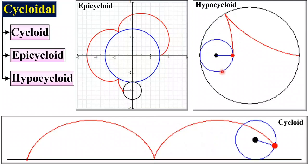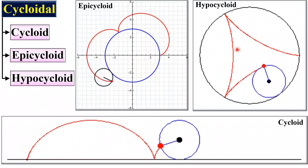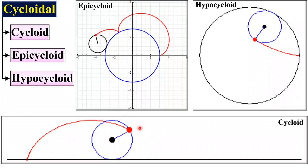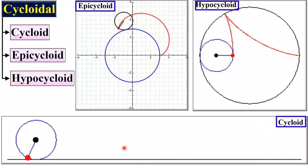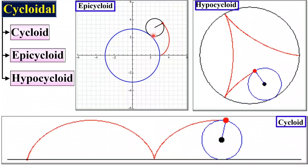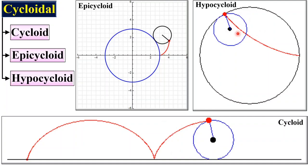Next is the hypocycloid. Here the rolling circle rolls inside of a circle, then it will generate the hypocycloid. So to summarize: if the rolling circle rolls on a straight line it creates a cycloid; if it rolls outside of a circle it is called epicycloid; and if it rolls inside of a circle it generates the hypocycloid.